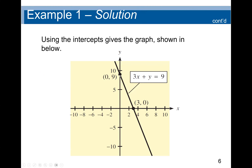Now we can plot the two points. For the y-intercept, we set x equal to zero, so the point is (0, 9). For the x-intercept, y is zero and x is three, giving the point (3, 0). Those are the two points, and then we draw a straight line across them.